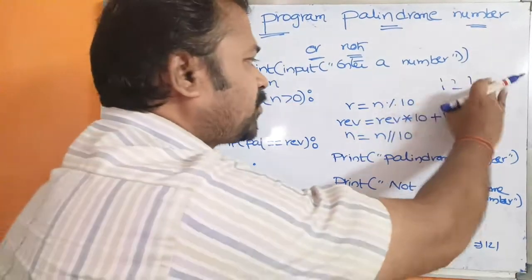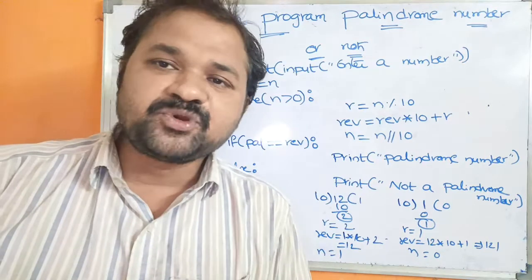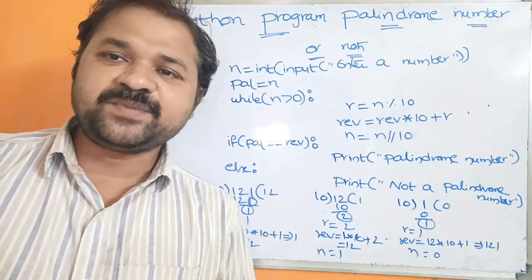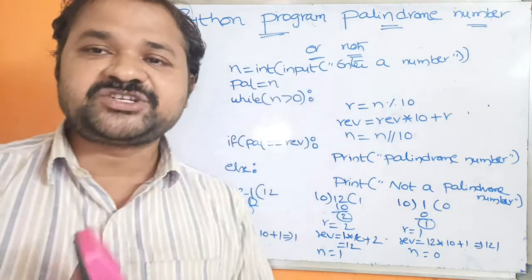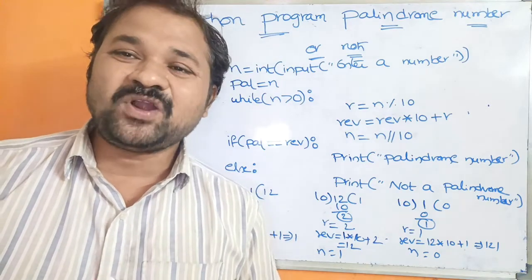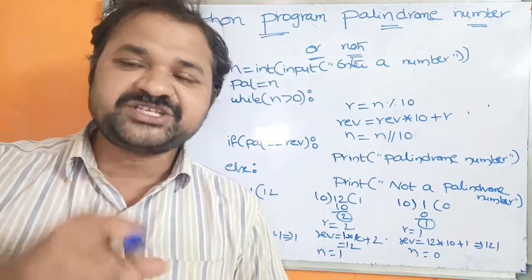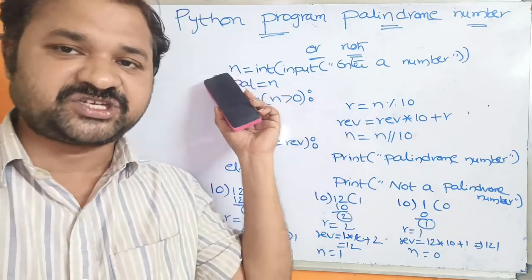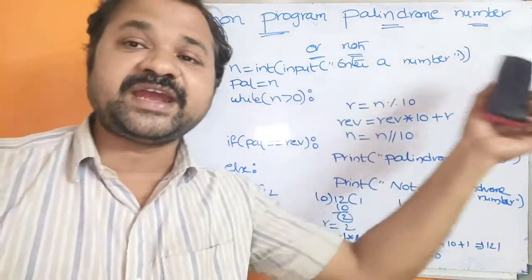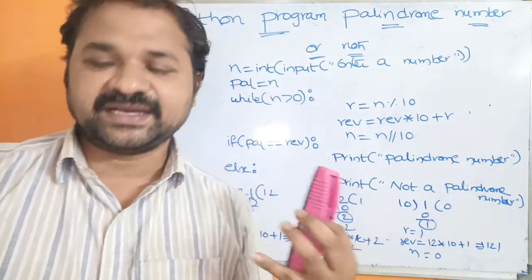Let us see the program. First we have to read a number from the keyboard. In Python, in order to read a number from the keyboard, we use the input function. But the problem with the input function is it returns the data as a string by default. So we have to convert the string into an integer using the int function. The statement is: n = int(input("Enter the number")). The int function converts the data into an integer.